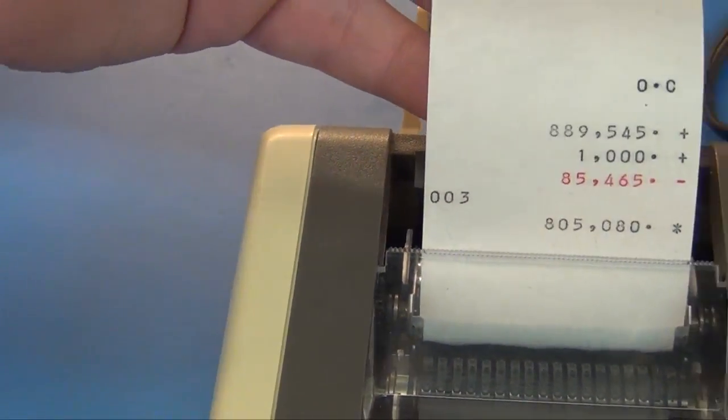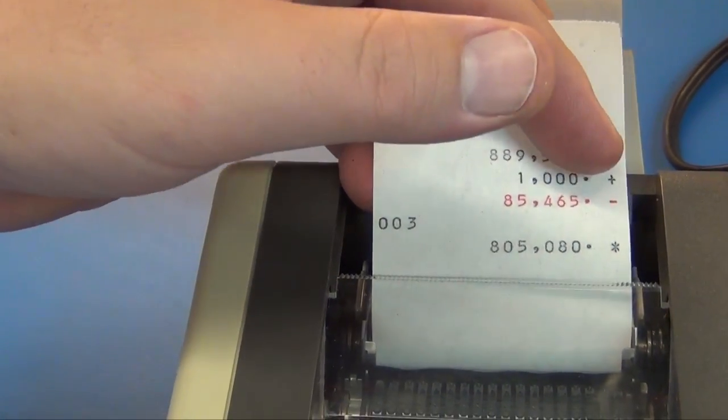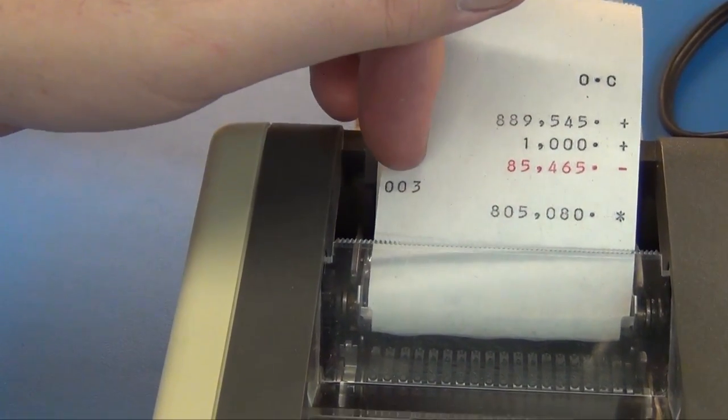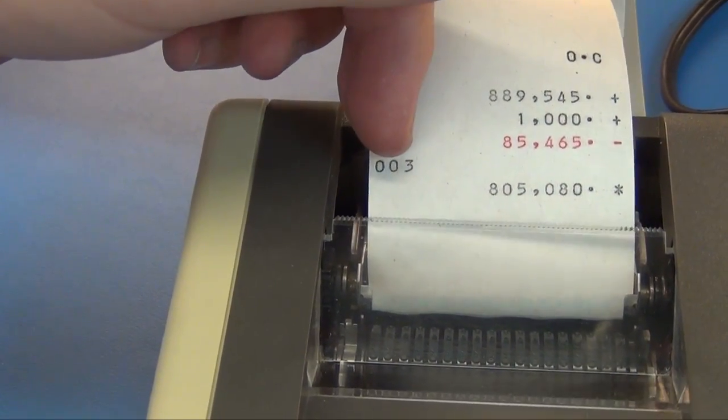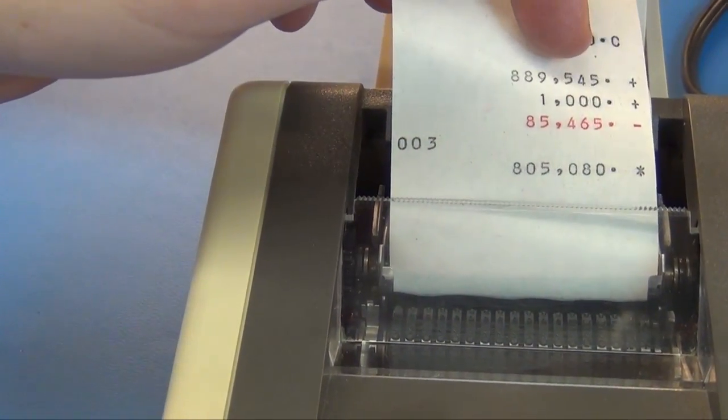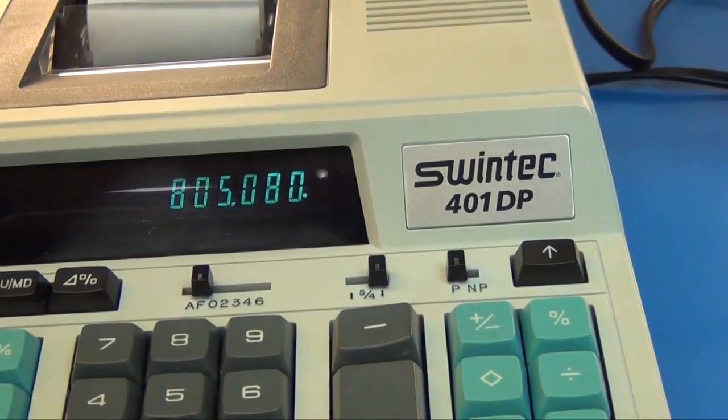It does real good. It starts off and says you did a clear. And then the number plus a thousand add. And then I did a negative on that. And then it said you had three numbers you entered. And the total, which is what this means, is this. So, you know, that's spot on what it's supposed to do.